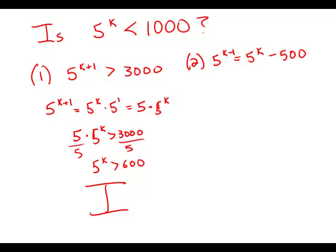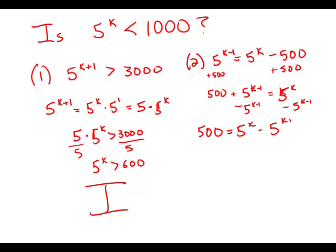Well, this is interesting. What I'm going to do is I'm going to add 500 to both sides. And then I'm going to subtract 5 to the k minus 1 from both sides. So I get 500 equals 5 to the k minus 5 to the k minus 1.